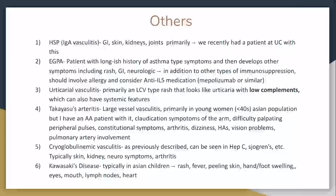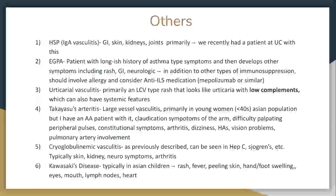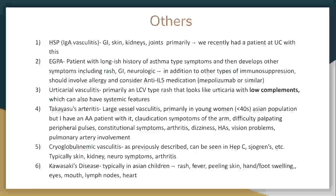Urticarial vasculitis — like a urticarial rash that doesn't go away, comes and goes. Low complement is sort of your buzzword for that disease, and you can also have systemic features. You sort of have an inflammatory constitutional phase with lots of inflammation of blood vessels, which can have serious consequences. For cryoglobulinemia — hepatitis C patients, Sjögren's patients as well. When you think about cryo, make sure you type them and see whether you can identify the underlying disease.